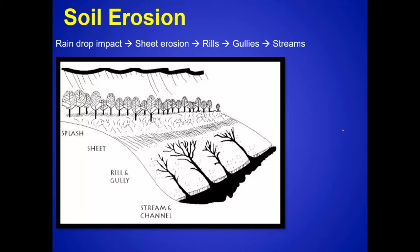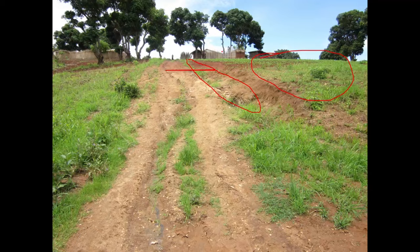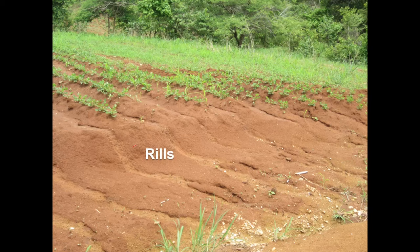Soil erosion starts drop by drop — one raindrop can break up the soils. Eventually it flows into sheets and then rills. Then gullies are small channels that build up, eventually leading to streams. It builds up and becomes highly erosive. These are more pictures from Africa showing the effects of erosion — corn crops where large streams are forming and eroding away and destroying their crops. Those rills gather together into a stream.